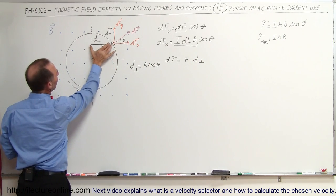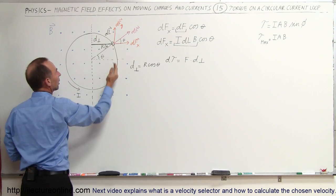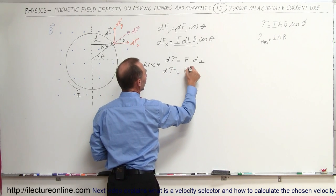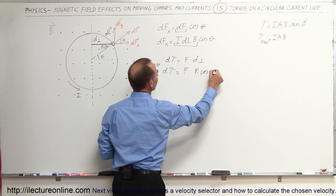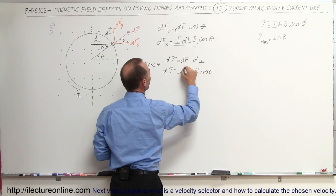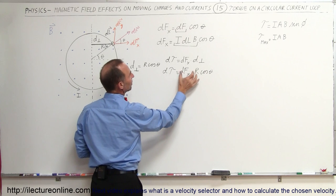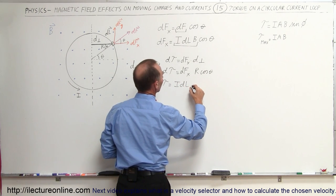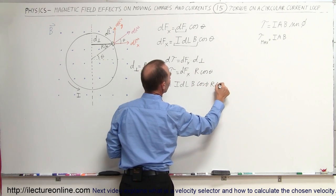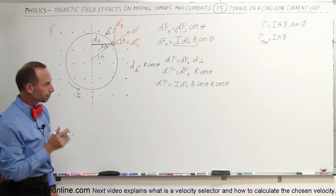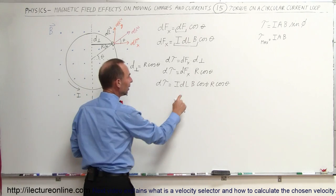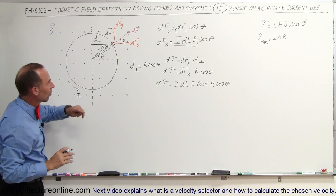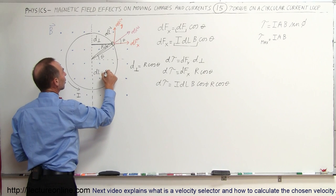The perpendicular distance — notice that this distance, depending upon where on the loop we are, is going to be equal to the radius of the loop times the cosine of the angle, which gives you that. So d-torque equals dF in the x-direction times r times cosine of theta. If we replace dF in the x-direction, we get d-torque equals I times dl times B times cosine of theta times r times cosine of theta. Now dl here we're going to change to r dθ — that's a small little arc length — so dl can be defined as r dθ.